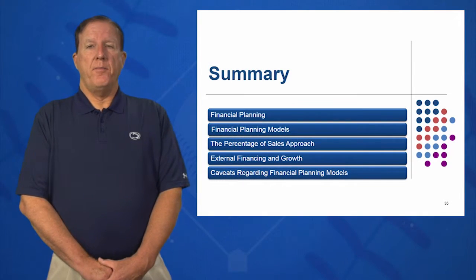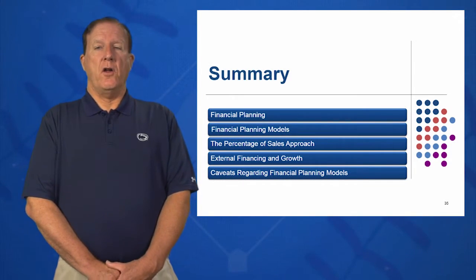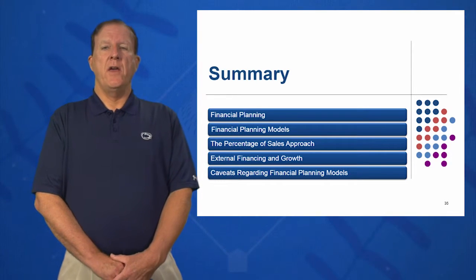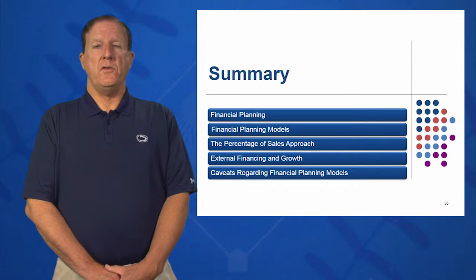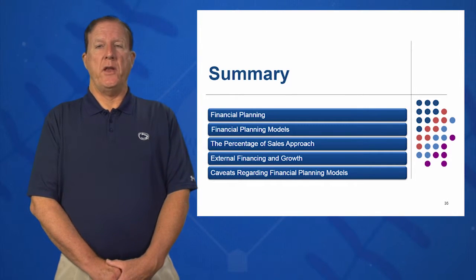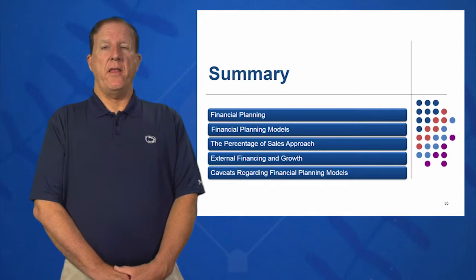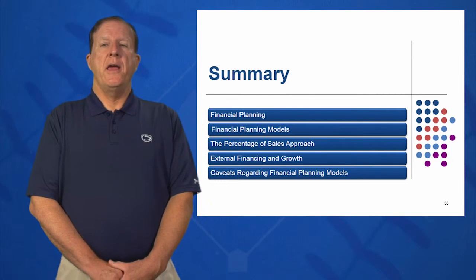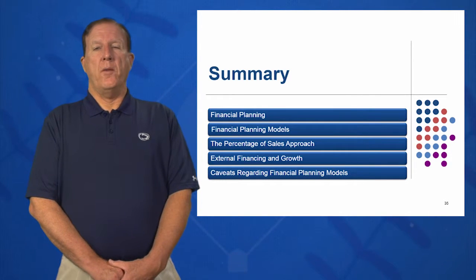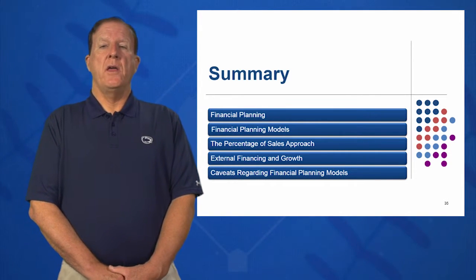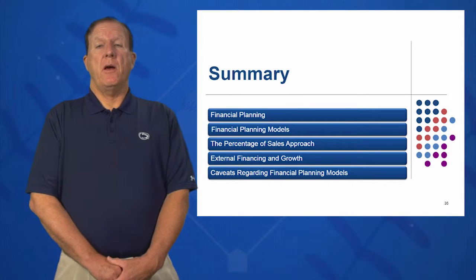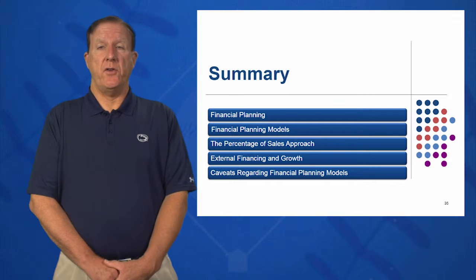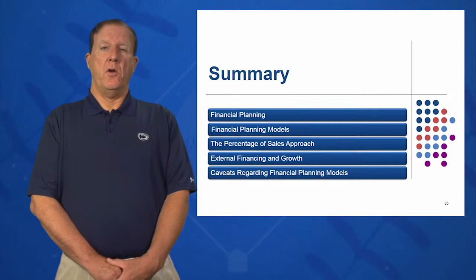In summary, in session four you should have learned all about financial planning and its importance in your professional life — what kinds of models we use, what kind of planning we do. Typically it's a one-year budget, then years two through five looking at the planning horizon in the form of an income statement, a balance sheet, and a cash flow. In objective three, we learned how to do the percent of sales approach, which is heavily used in industry.